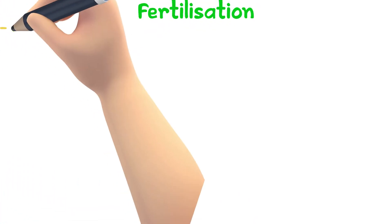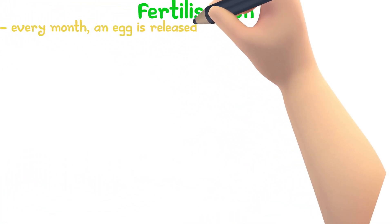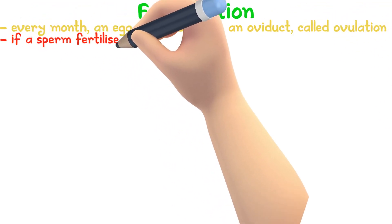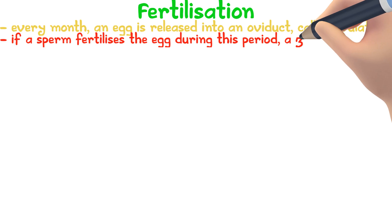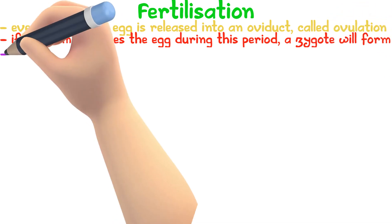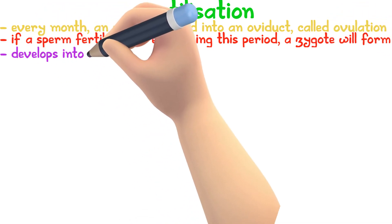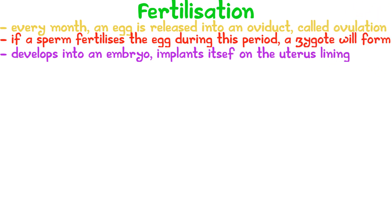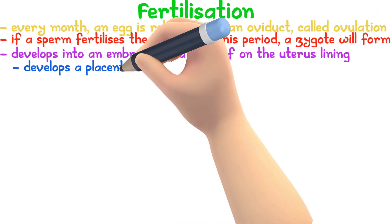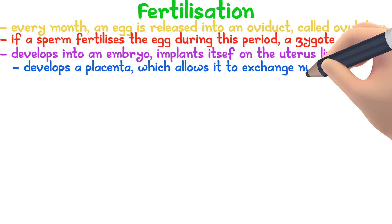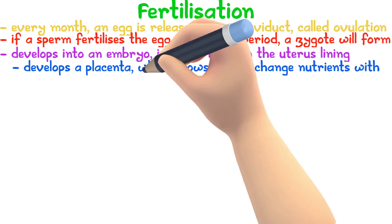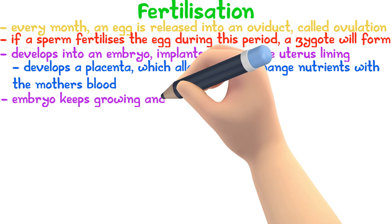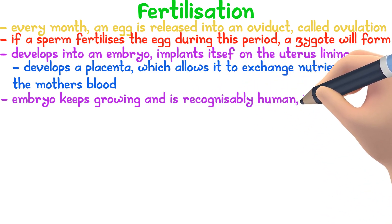Every month, an egg is released into an oviduct in a process called ovulation. If the sperm fertilizes the egg during this period, a zygote will form, which develops into an embryo and implants itself into the uterus lining. The embryo develops a placenta which allows it to exchange nutrients with the mother's blood. Once the embryo keeps growing and is recognisably human, it is called a fetus.